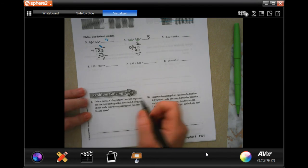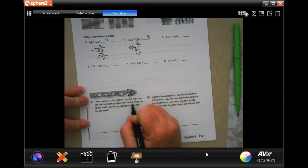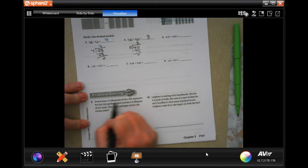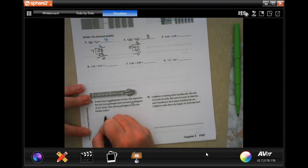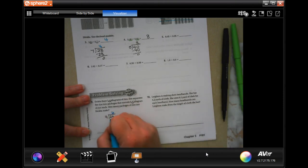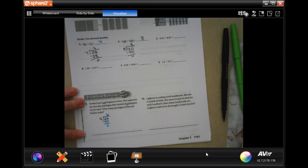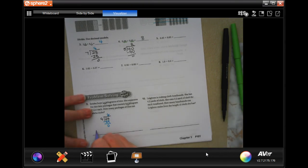It says Keisha buys 2.4 kilograms of rice. She separates the rice into packages that contain 0.4 kilograms of rice each. How many packages of rice can Keisha make? So I would have to move this one one time and this one one time. So now we're going to have 4 into 24. Well, 4 goes into 24 six times, which is 24. Subtract and get zero. So that will be six packages.